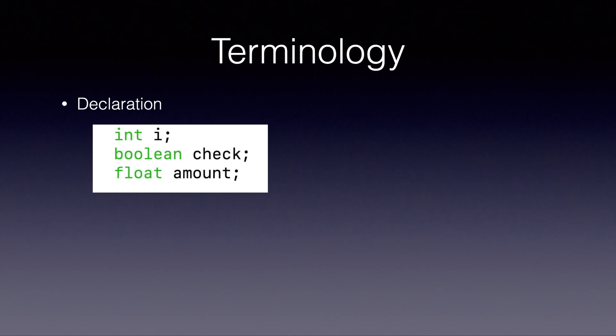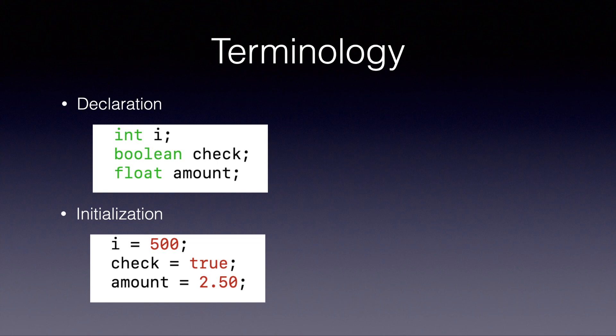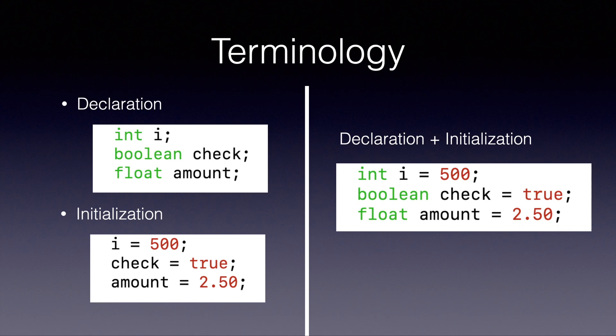The next term is initialization. Initialization is a statement where we initialize or store a value into the variable. We can only initialize already declared variables. We can also declare and initialize a variable in the same line. So as you see, int i = 500 — I have declared int i and also initialized the value 500 to i in the very first example.